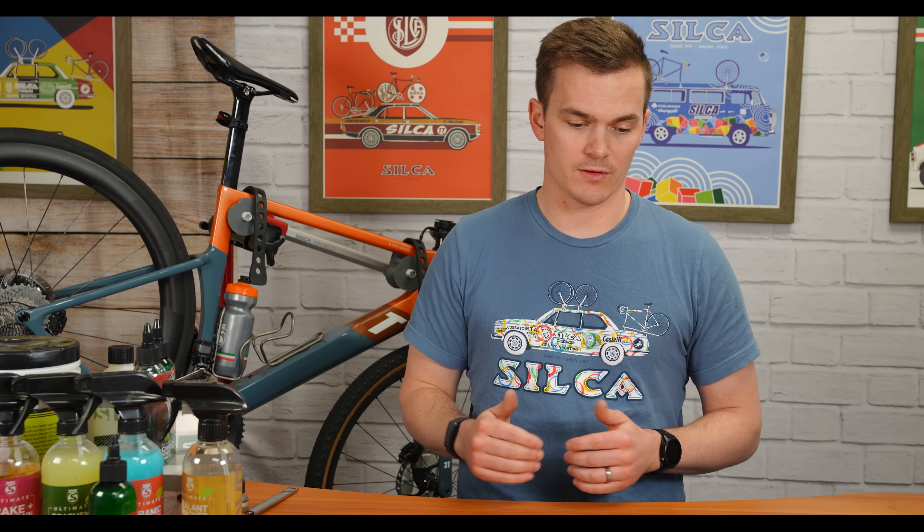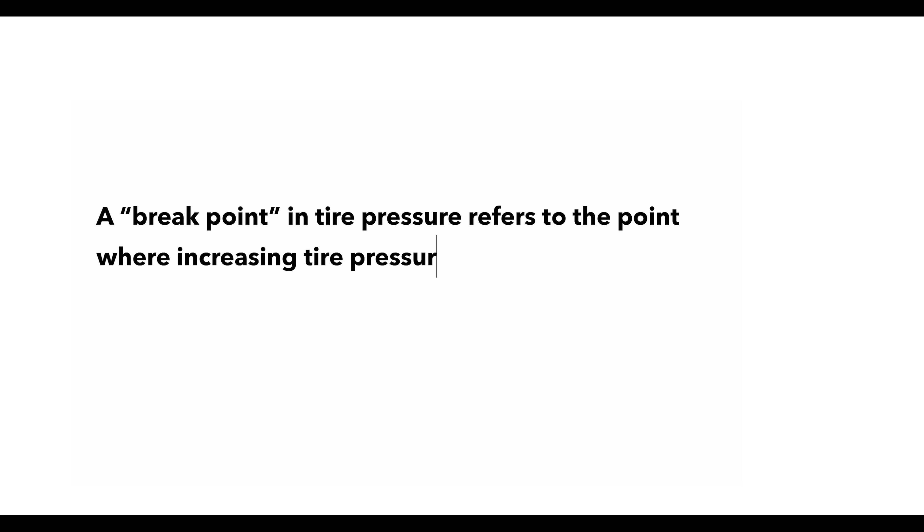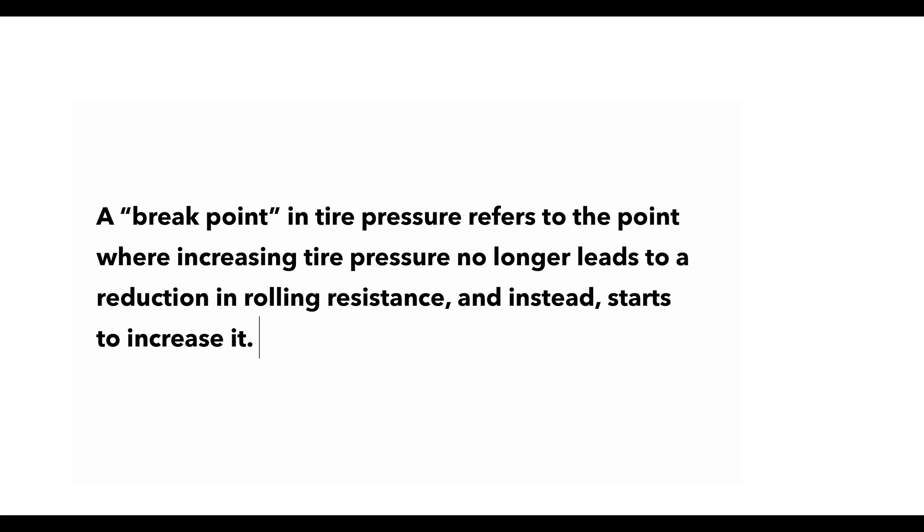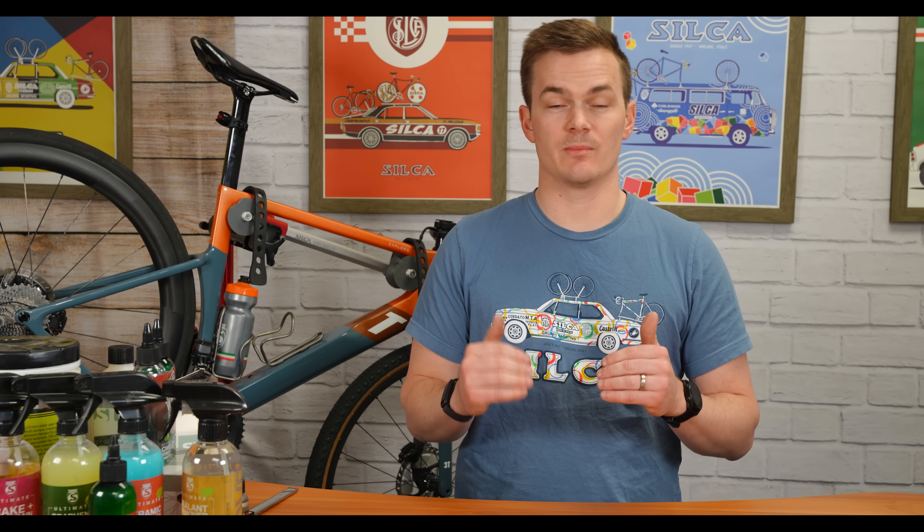Going through the tire pressure calculator, the first thing I want to talk about is what we're actually calculating. There are a bunch of different calculators out there that use different inputs to get different answers. What we're calculating is the breakpoint pressure. When you have casing losses and surface impedance losses, those are the two main factors. Casing losses is what we've known for years: as your tire pressure goes down, your tire gets squishier and feels slower. As you bump it up, it gets harder and feels faster. And for the most part, the higher the pressure, the lower the casing losses.